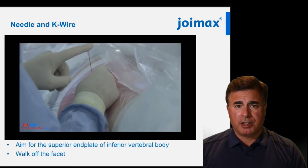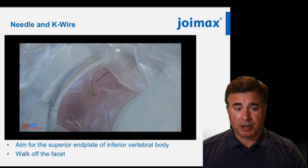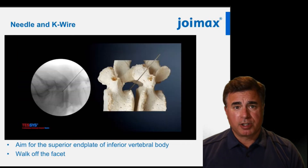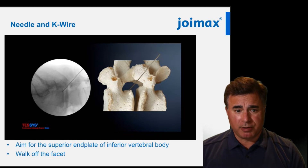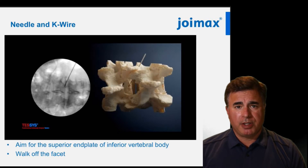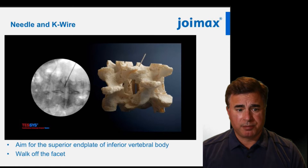The target is the superior end plate of the inferior vertebral body, which is the base of Kambin's triangle. Remember that this is a transismic approach, so as you walk off of the facet you will drop into the base of Kambin's triangle. You want to have your needle touching the promontory on the lateral projection, and be just medial to the medial border of the pedicle on the AP projection.